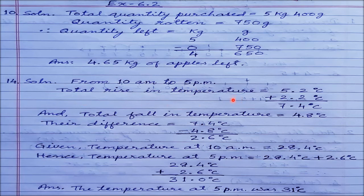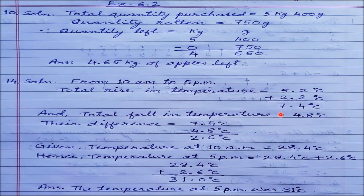From 10 a.m. to 5 p.m., the temperature rose two times: first it rose 5.2 degrees centigrade, and the second time it rose 2.2 degrees centigrade. So total rise was 5.2 plus 2.2, which is 7.4 degrees centigrade. The total fall in temperature from 10 a.m. to 5 p.m. was recorded only once and it was 4.8 degrees centigrade.